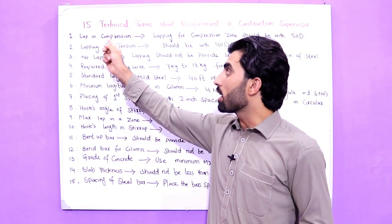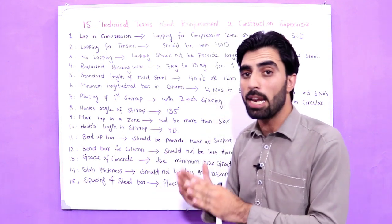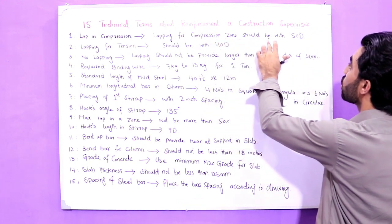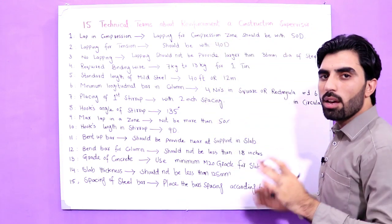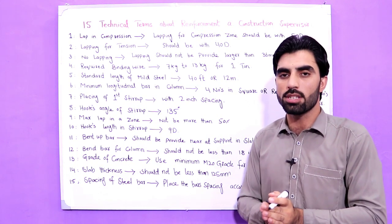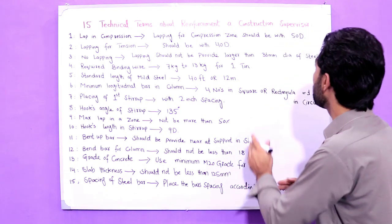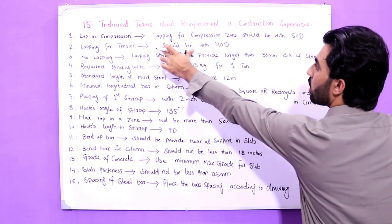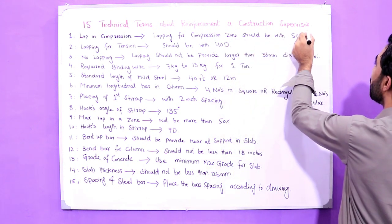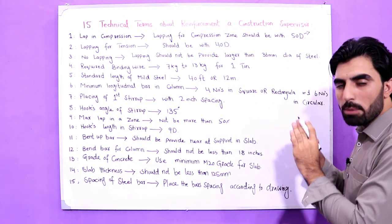The first term is lapping for compression. The lapping length for a compression zone should be 50D, where D is the diameter of the steel bar you are using in the compression member. Because our RCC column is in the compression zone, the lapping length for a column should be 50D.